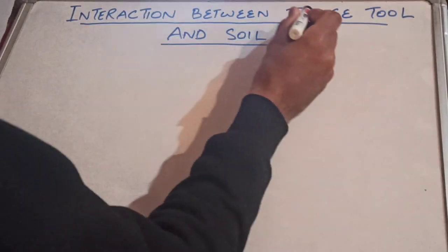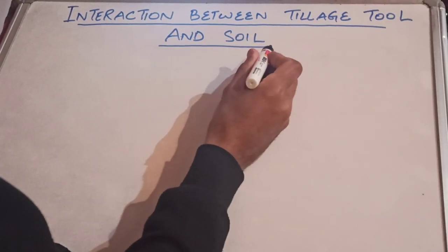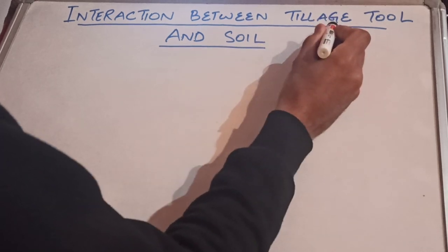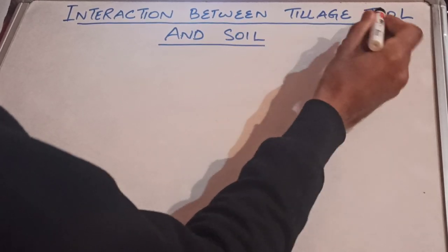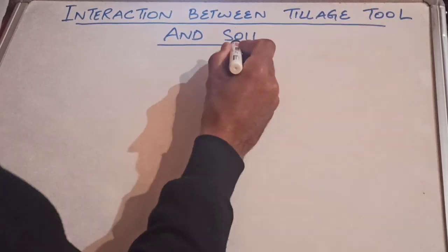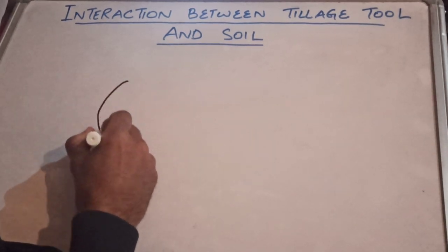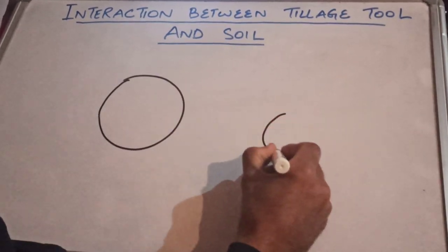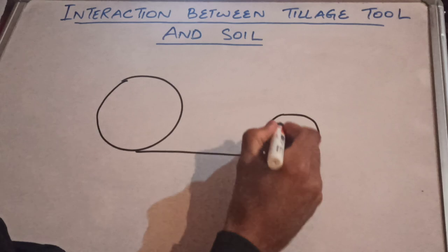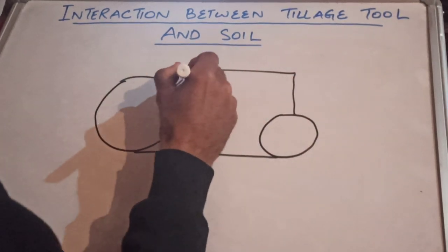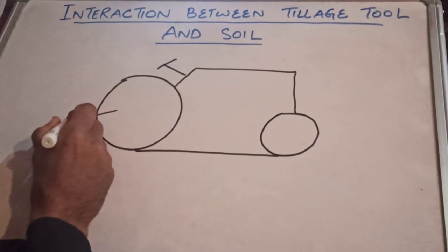Today's topic is interaction between tillage tool and soil. This is actually the interaction between the component of the tillage tool and the soil. For example, if I analyze this prime mover, which is usually a tractor, and here you are hanging a tillage tool.